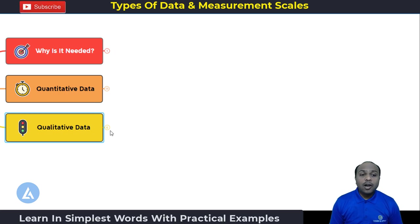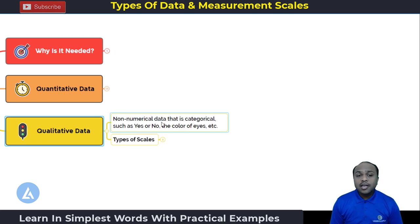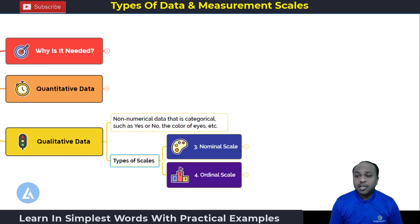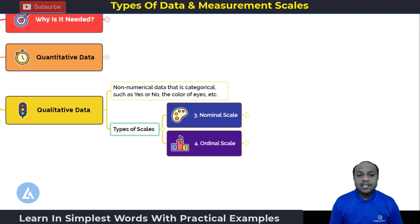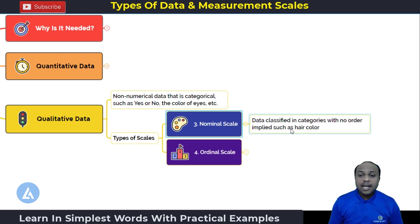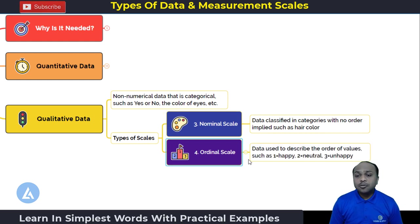Now let's go into the detail for qualitative data. As the name indicates, qualitative data are non-numerical data that are categorical, such as yes or no, the color of eyes, etc. There are two types of scales associated with qualitative data: nominal scale and ordinal scale. In the nominal scale, data is classified into categories with no order implied, such as hair color. In the ordinal scale, data is used to describe the order of values — for example, 1 equals happy, 2 equals neutral, and 3 equals unhappy — so some order exists.